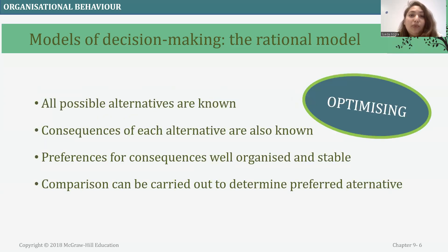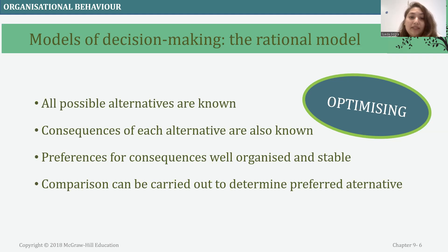Within the rational model of decision making, we need to figure out all possible alternatives to the problem and know the consequences of each alternative. We have to have a well-organized and stable preference of consequences, and a comparison should be carried out to determine the preferred alternative.